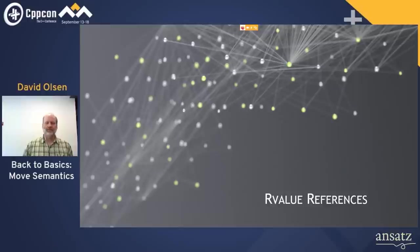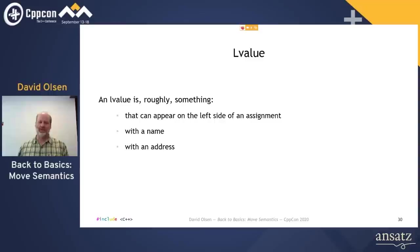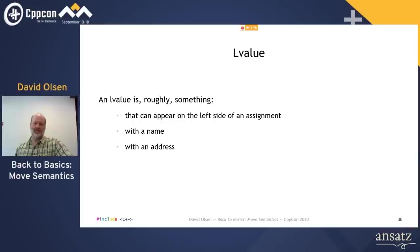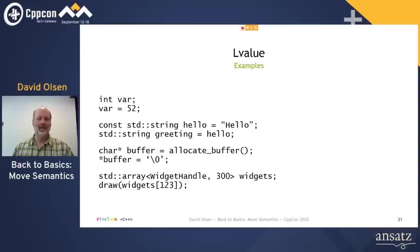The first piece of understanding move semantics is R-value references. But before we can talk about R-value references, we need a refresher on L-values versus R-values. To greatly oversimplify things, an L-value is something that can appear on the left side of an assignment operator — that's what the L in L-value comes from. Something with a name is usually an L-value, and it is something that you can take the address of. Of the three points, the last one about addresses is the most reliable. If you can apply the built-in address-of operator to something, it is an L-value.